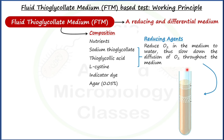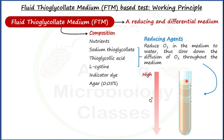These reducing agents reduce dissolved oxygen in the medium to water, slowing down the diffusion of oxygen throughout the medium. This creates an oxygen gradient in the tube: the upper layer has high oxygen concentration, the subsurface layer has less, and the bottom has no oxygen. The top one-third of the tube is restricted to the presence of oxygen, while the bottom part is oxygen-free.